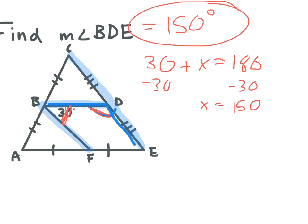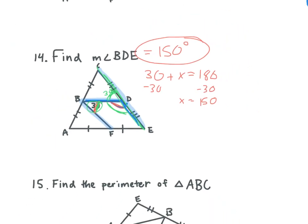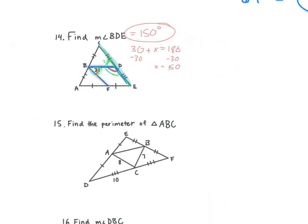Another way to do this one is: we know that angle FBD — that's 30 — and this angle here are alternate interior angles, so this is also going to be 30. And since this is a straight line, we know that this angle and the 30 are going to add up to 180. So there are multiple ways to do questions like these.